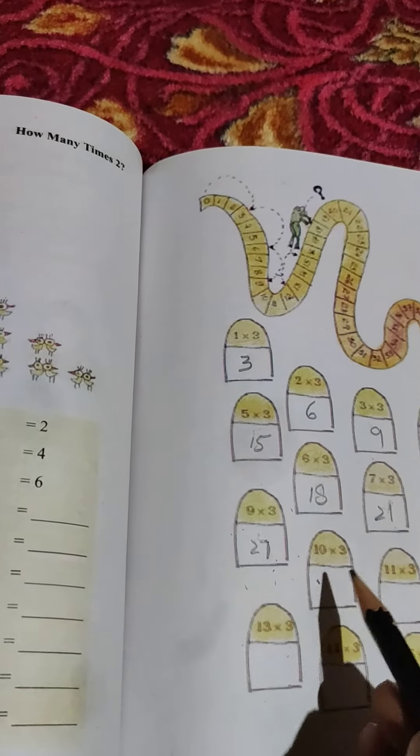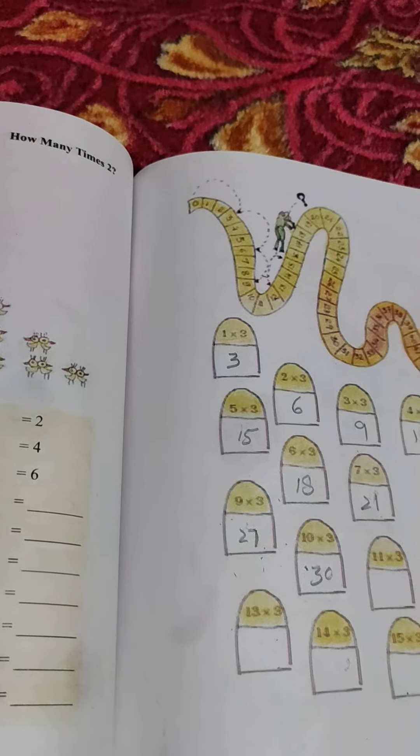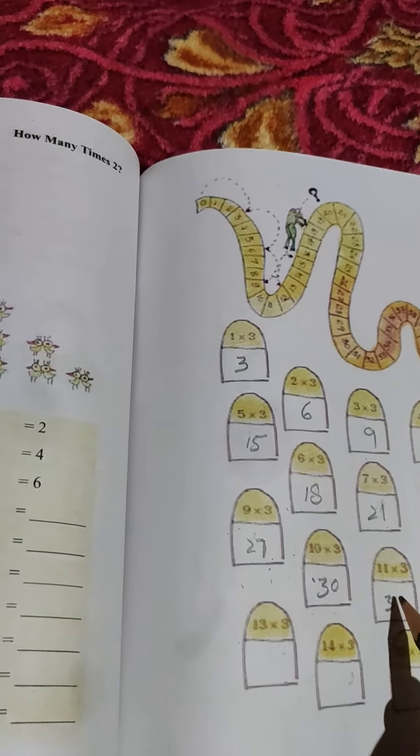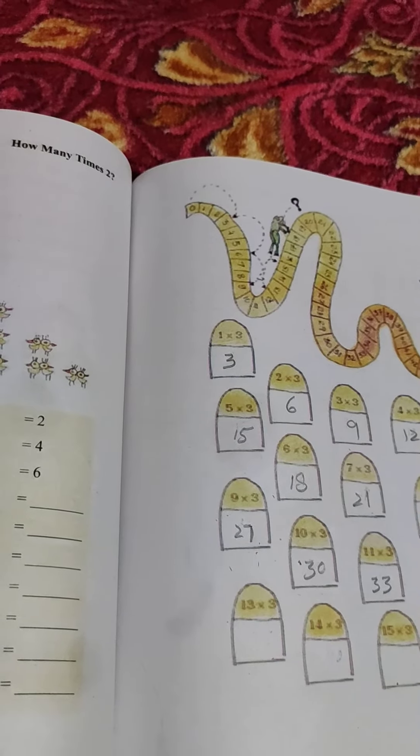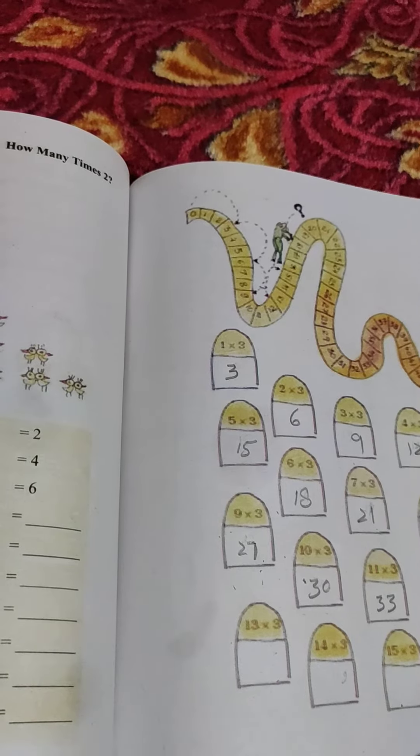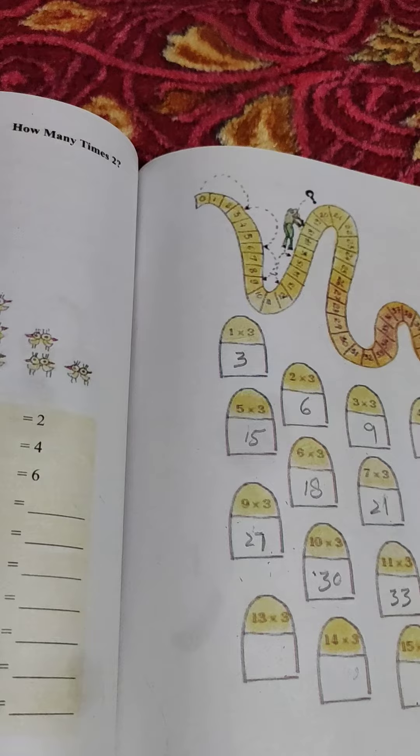Ten threes are 30. Eleven threes are 33. Twelve threes are 36. Thirteen threes are 39.